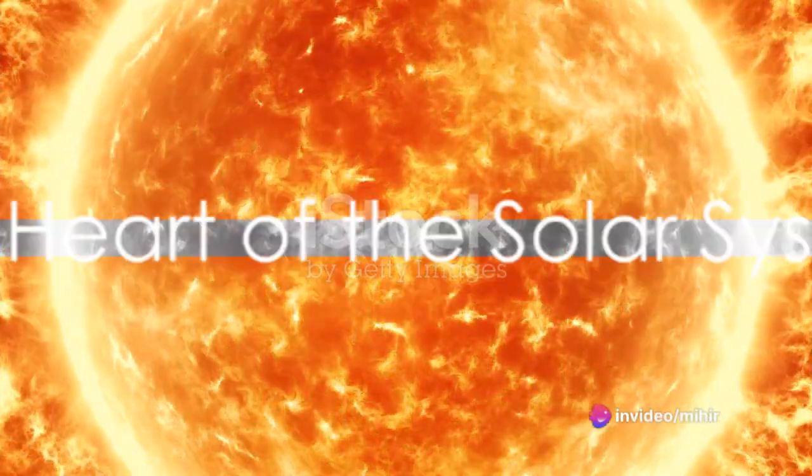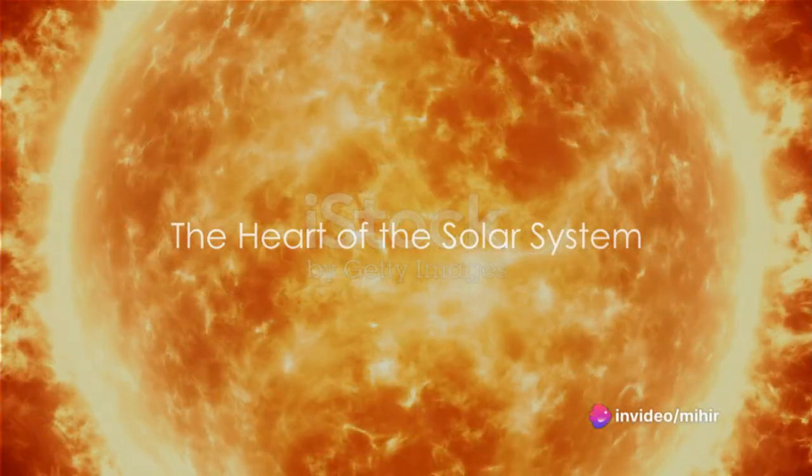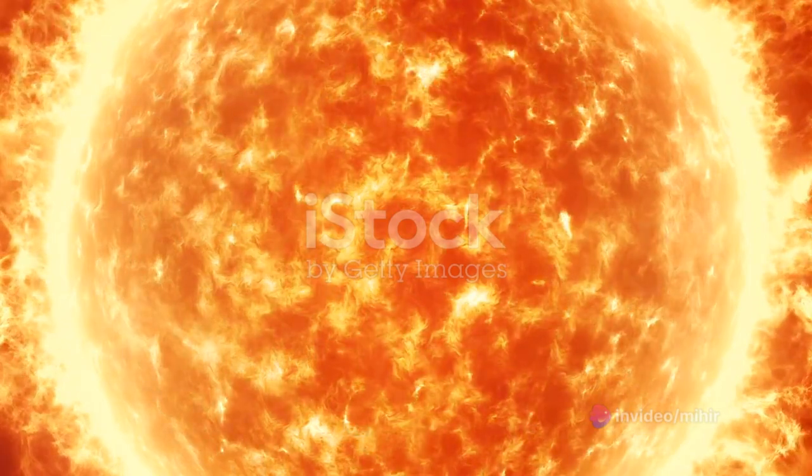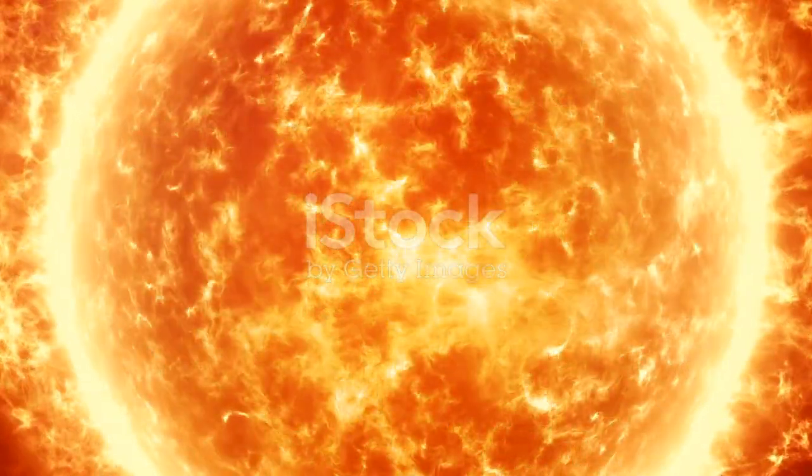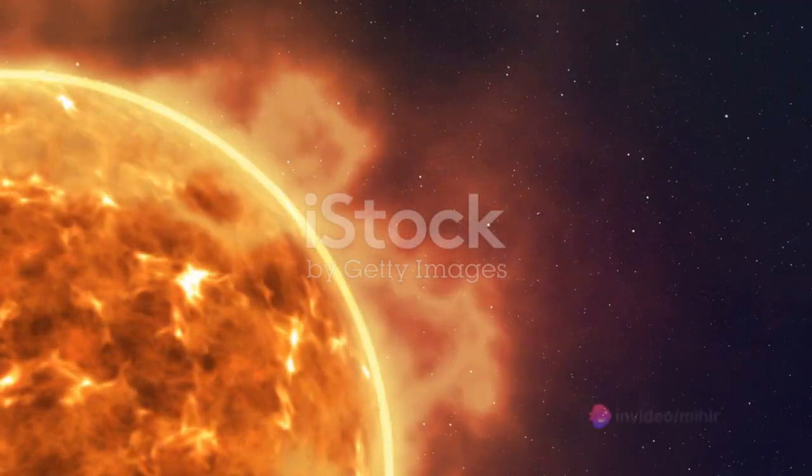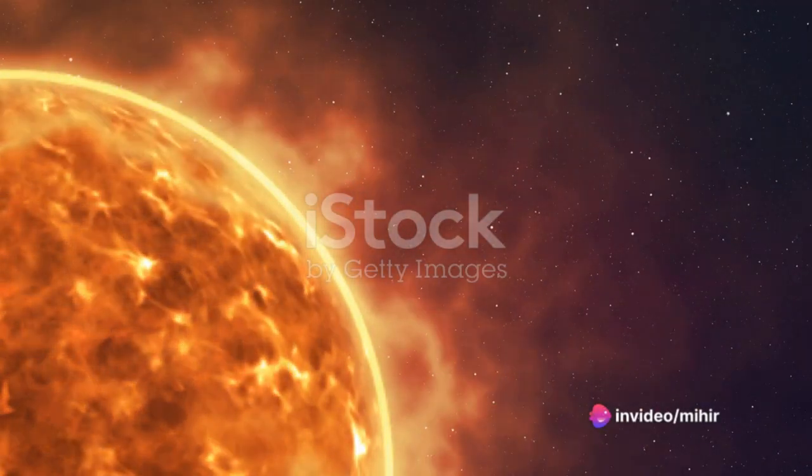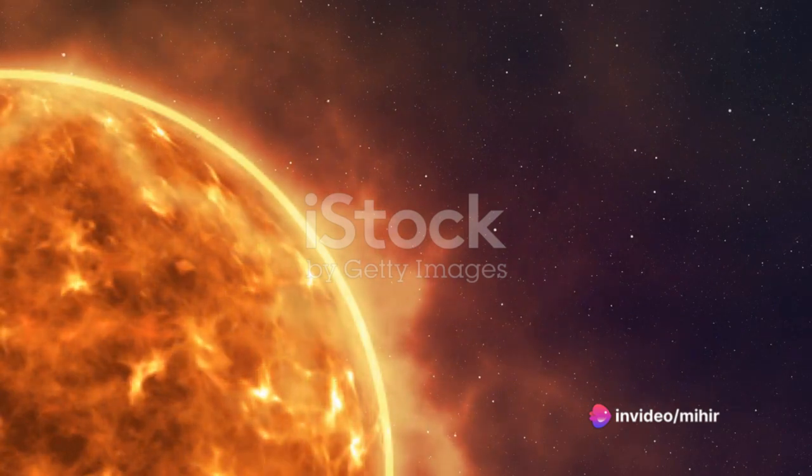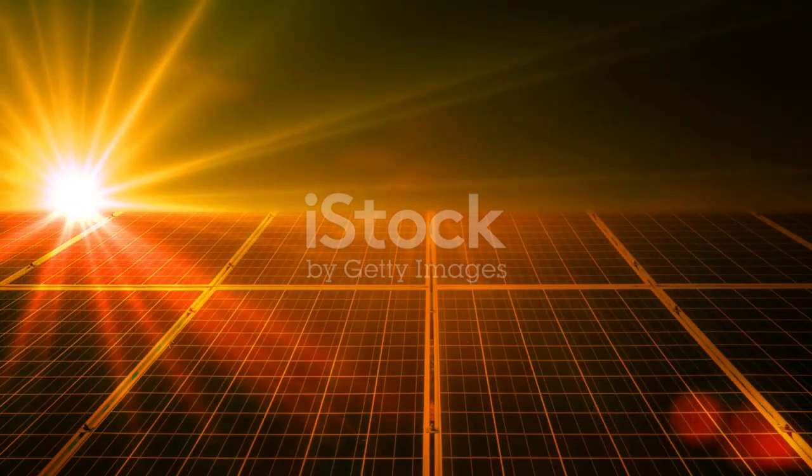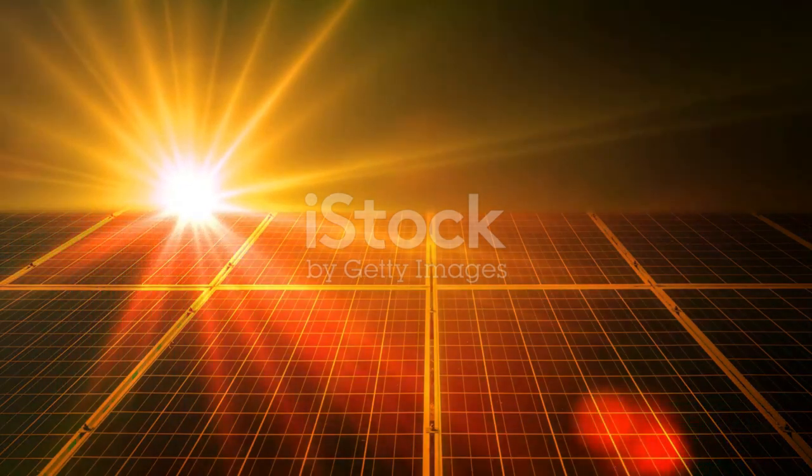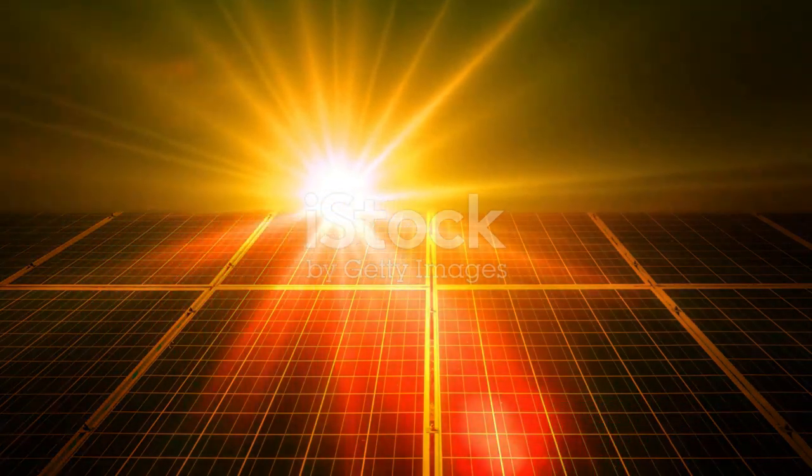At the heart of our solar system, the sun reigns supreme. As the largest object in our cosmic neighborhood, it holds a staggering 99.8% of the system's total mass. This enormous celestial body is composed mainly of hydrogen and helium, with trace amounts of heavier elements. It's this composition that fuels the nuclear reactions at the sun's core, emitting the light and heat that we feel on Earth.